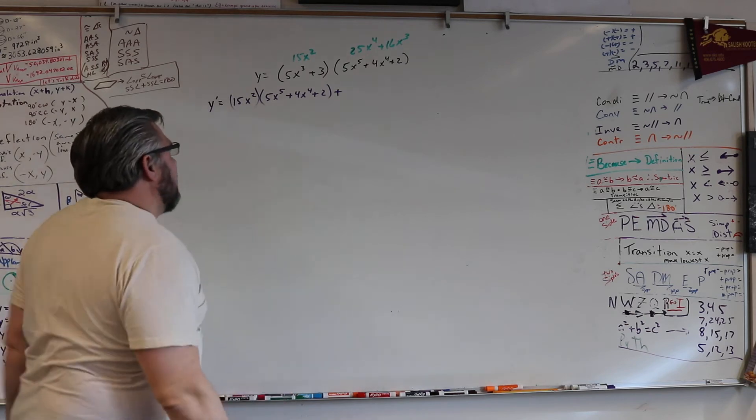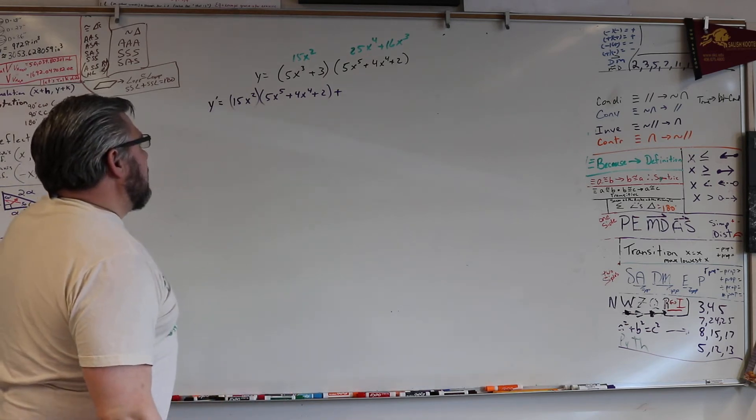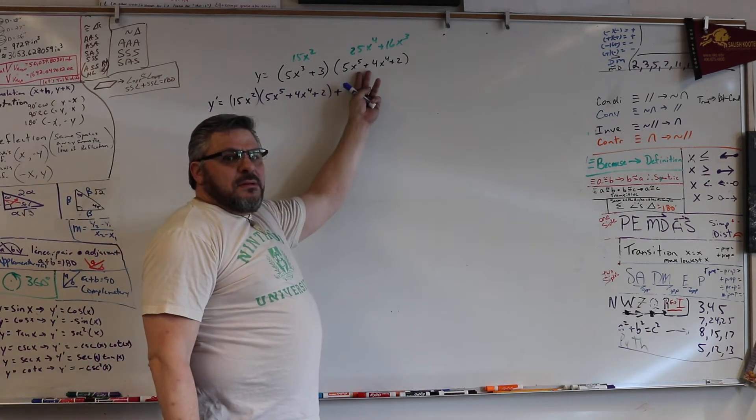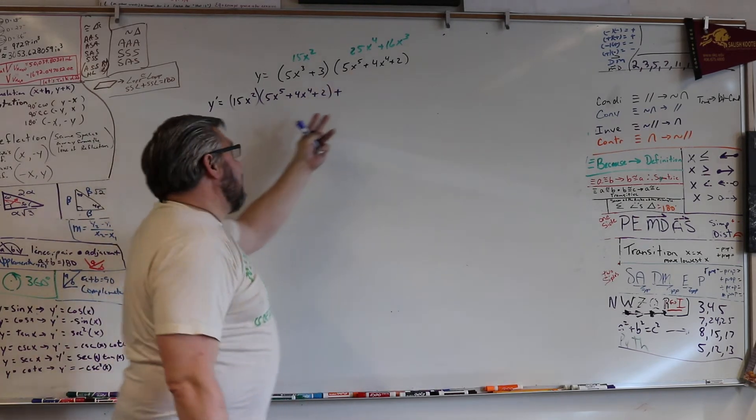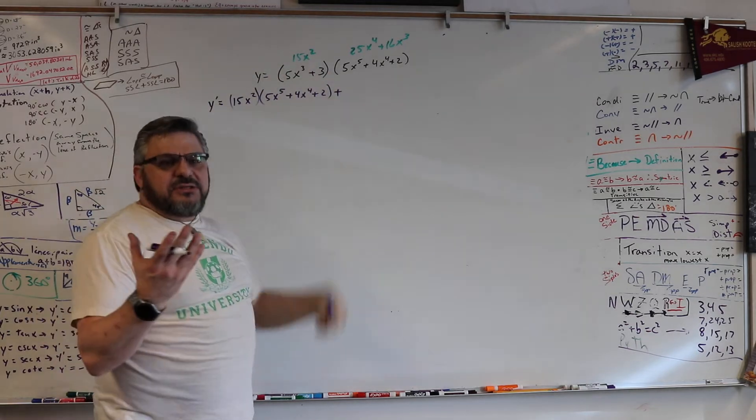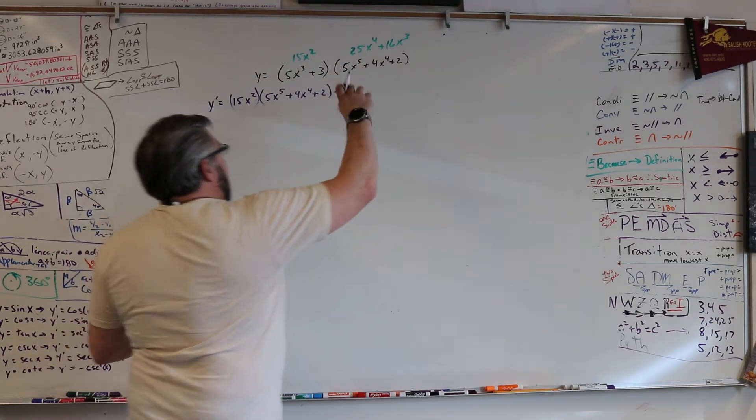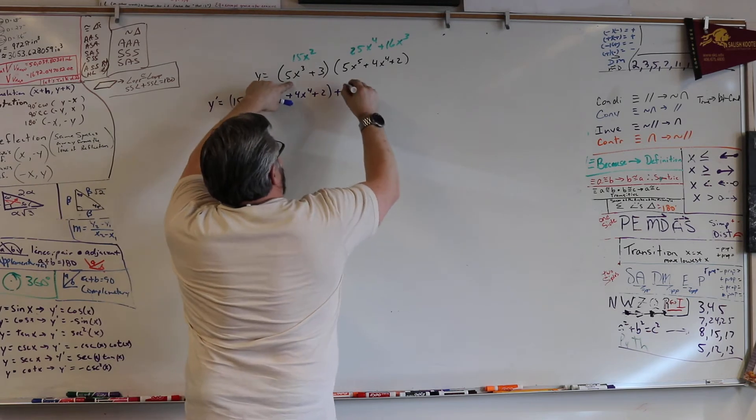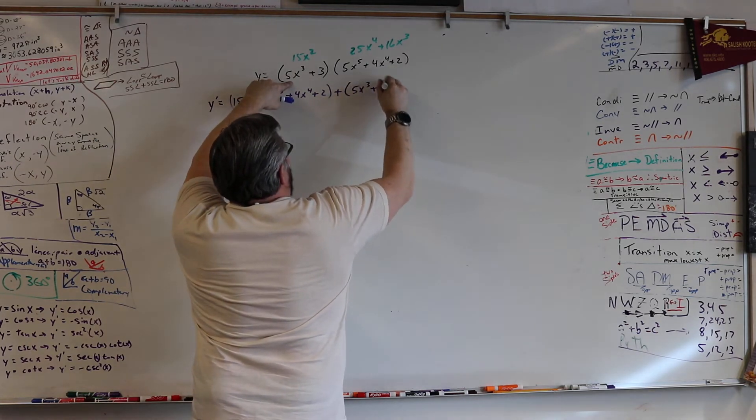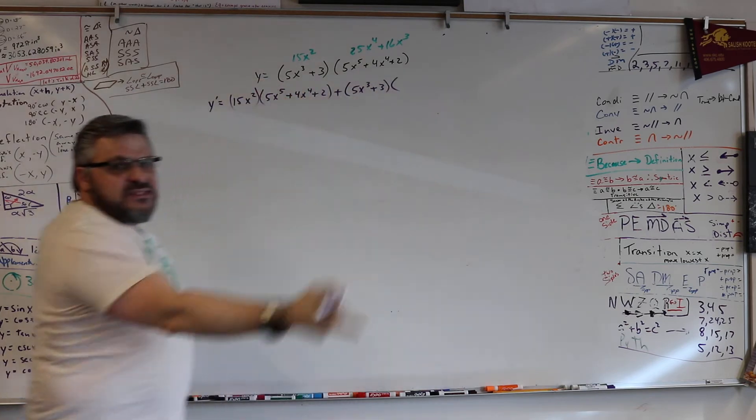Where's the power of 5 come from? He's writing it from that thing. He's writing that, the second function. Remember the first derivative and the second original function. Then the first original function 5x cubed plus 3 times the second derivative.